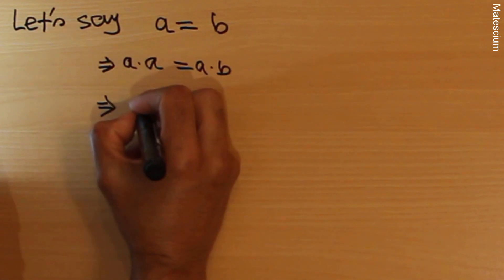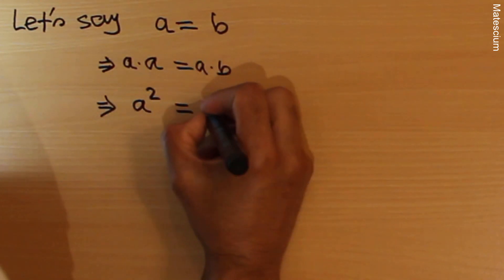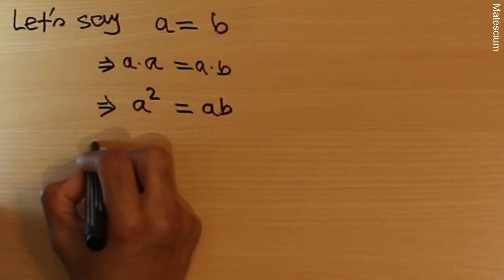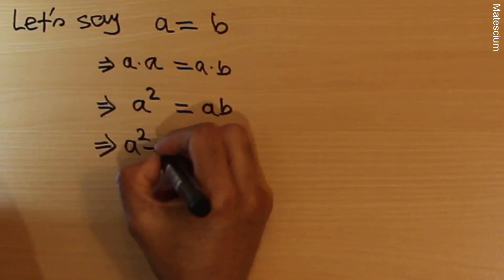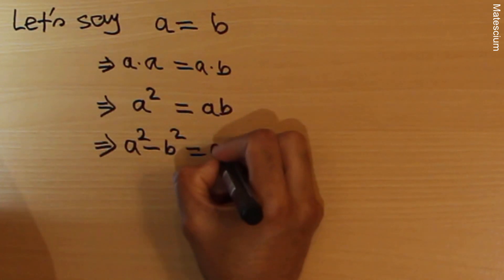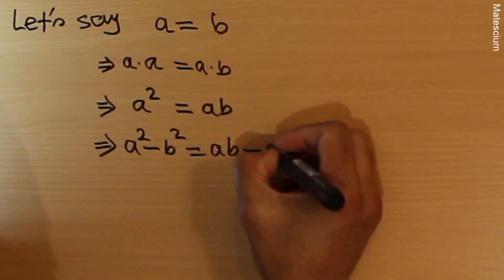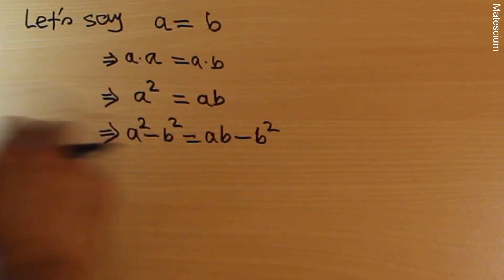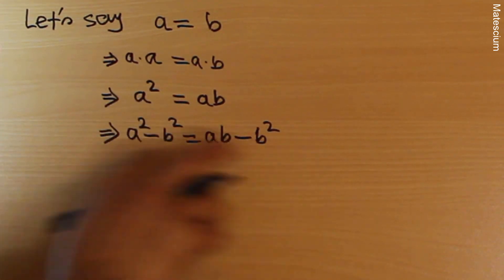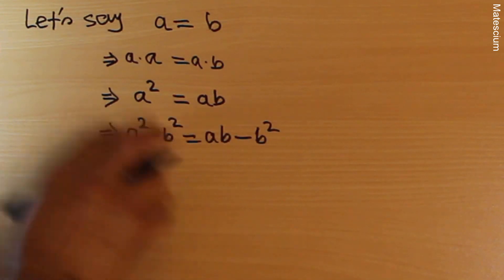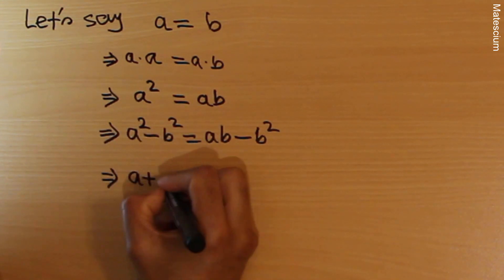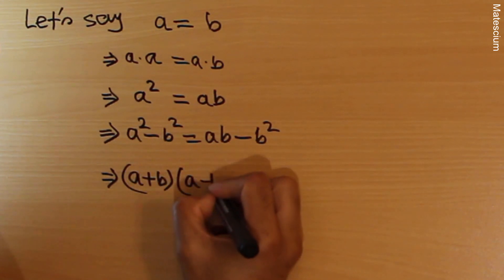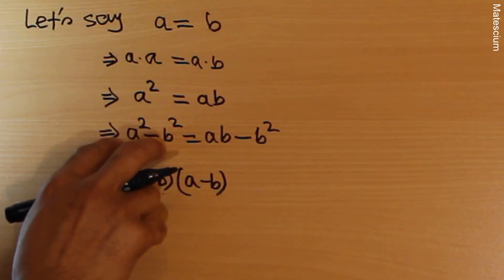The left-hand side becomes a squared. Now I subtract b squared from both sides. Subtracting b squared from the left-hand side and b squared from the right-hand side. Looking at the left-hand side, a squared minus b squared — there is a very famous formula from high school: a squared minus b squared equals a plus b times a minus b.